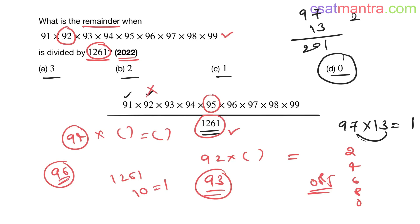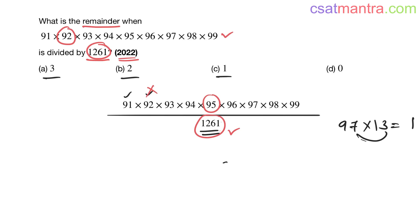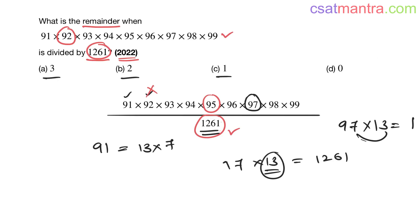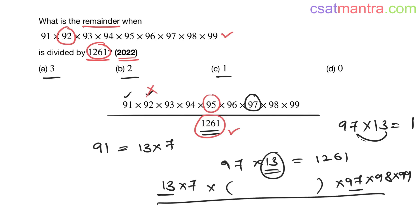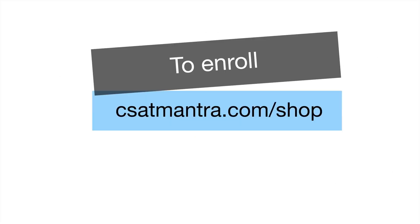97 × 13: 3 × 7 = 21, 3 × 9 = 27, plus 2 is 29, plus 97 — working it out: 97 × 13 = 1261. So 97 × 13 = 1261. This means 1261 is present in the product and gets cancelled out — it perfectly divides the product. Therefore the remainder is 0. The answer is D: 0.